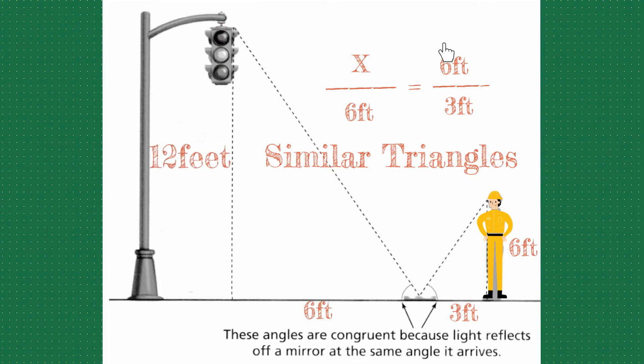Once our proportion is set up, we can take and do cross products. Six times six divided by three and we're gonna get a height of 12 feet.